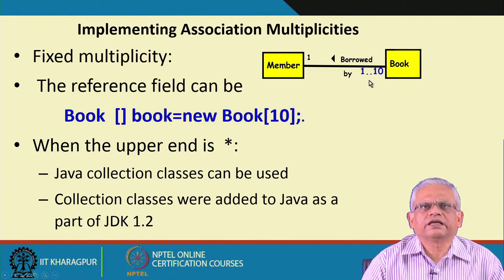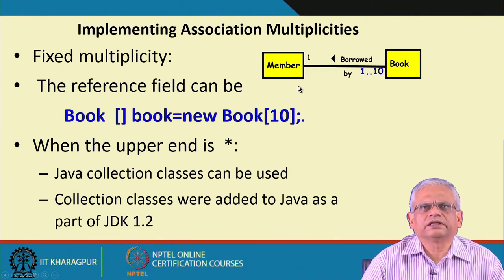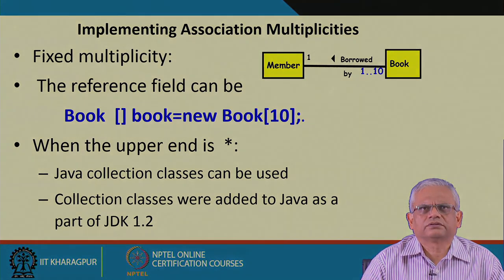Fortunately, Java has collection classes that can be used when array sizes are variable. Collection classes were added to Java as part of JDK 1.2. In the next session we will see how the various types of Java collection classes can be used to implement multiplicities in an association. We will stop here, thank you.